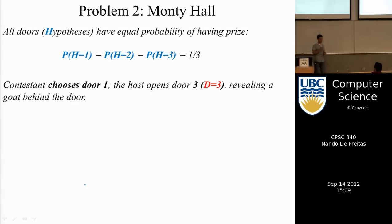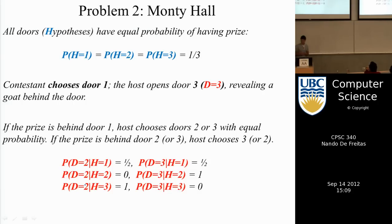We see that door three—that's our data—and this is the first time data is sort of entering this course. The datum that we get is that it's a goat behind door three. And so now the host asks us, do you want to switch to door two? Now let's think about it.